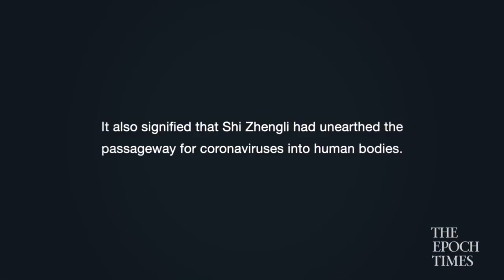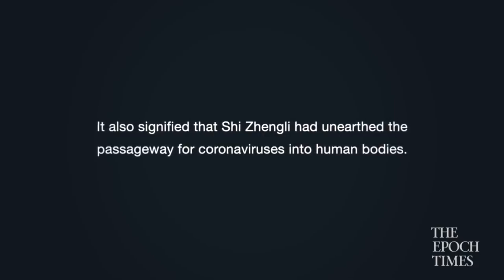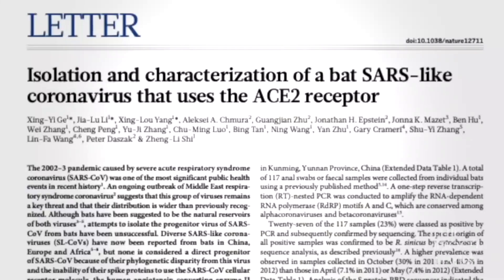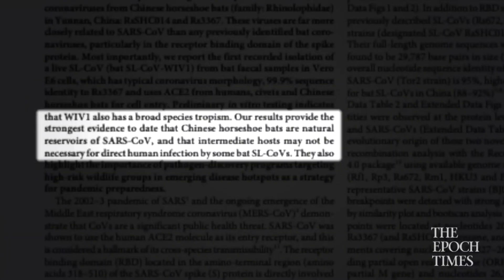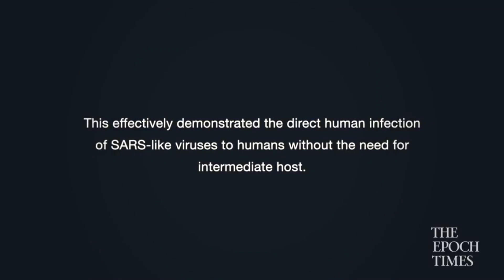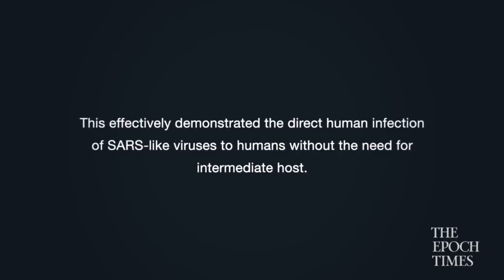In June 2010, a team including Shi Zhengli published a paper describing research into the susceptibility of ACE2 proteins of different bat species to the S protein of the SARS virus. They also modified key amino acid residues to mutate the bat's ACE2 to examine compatibility with the SARS-S protein. In October 2013, Shi published in Nature claiming a breakthrough: they successfully isolated three viruses from bats, one of which had an S protein that integrated with human ACE2 receptors, demonstrating direct human infection without an intermediary host.